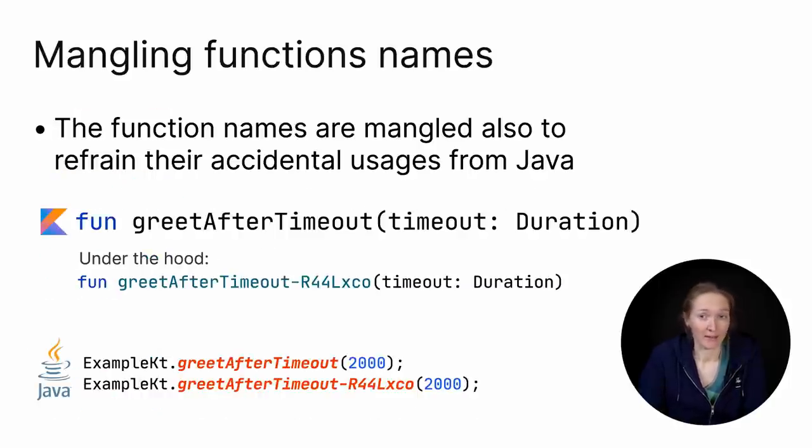The second reason for mangling is to refrain its accidental usage from Java. Kotlin usages are type safe. You can only pass the correct type. But if you use it from Java, you can have the same confusion problems as when using primitive types. To prevent them, both these invocations don't compile in Java. When the function name is mangled, you no longer can call it from Java. Java sees only the mangled name, but you can't call it because it's not a valid identifier.